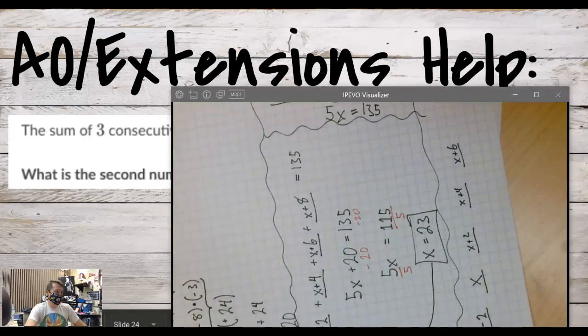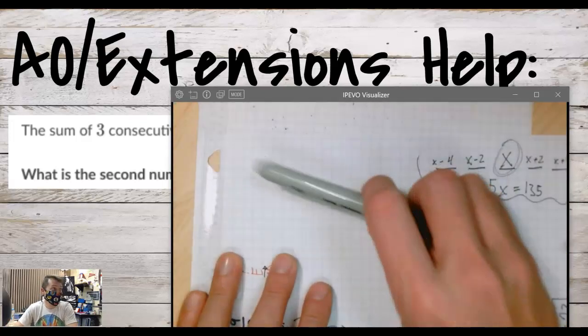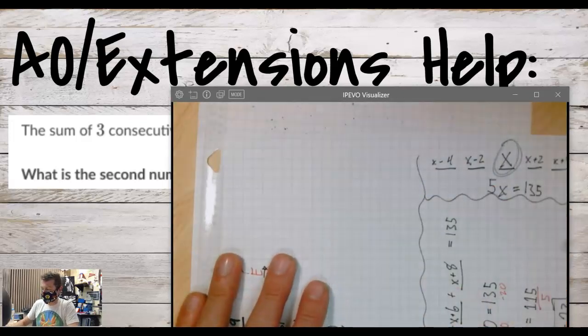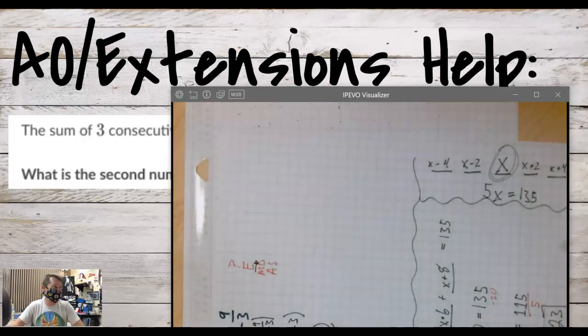All right, so we've got another consecutive integer problem. I'll use this part. Don't do what I'm doing by writing your work in different directions on a piece of paper, but this is like scrap paper for me.